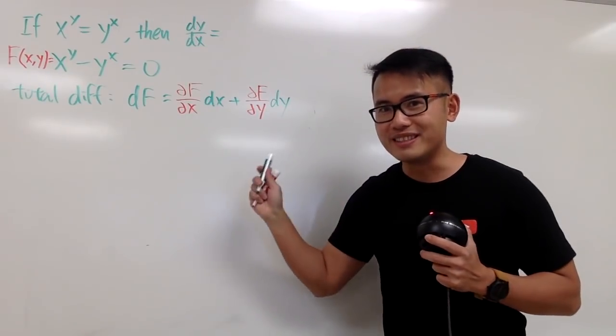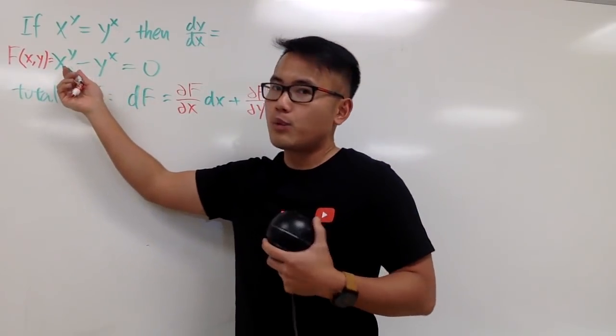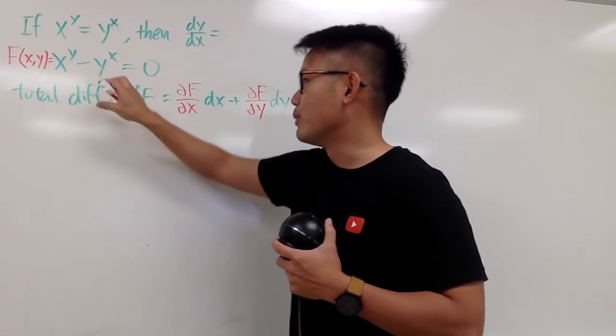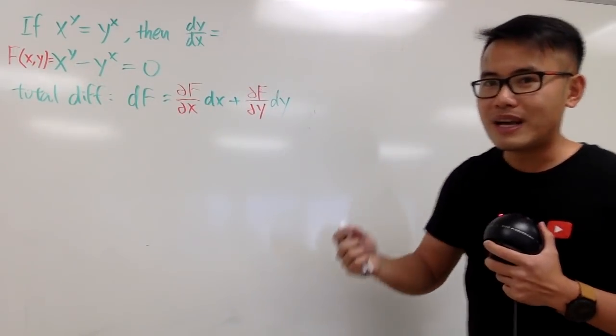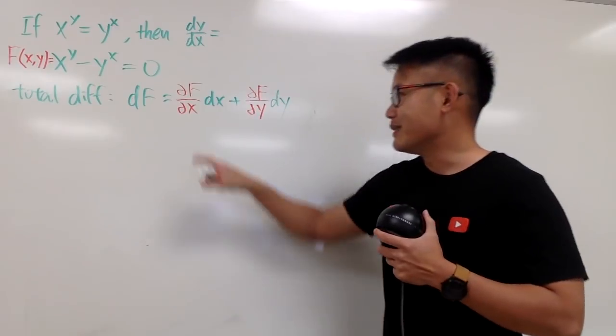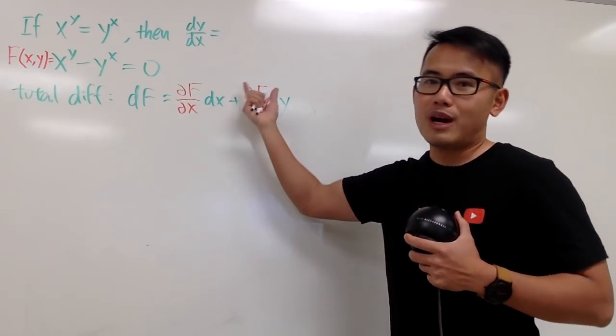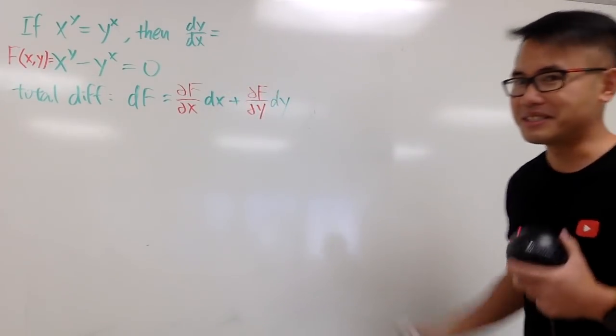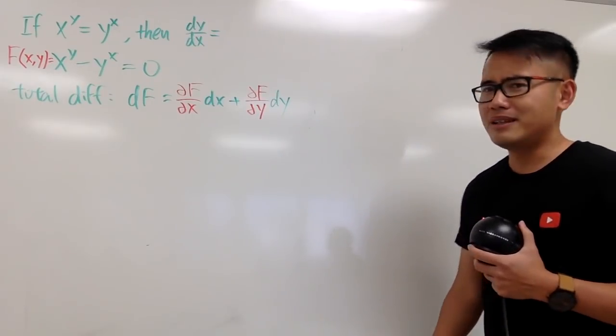And the cool part of doing this is that you may have like 100 variables right here, and you pretty much just continue with the same fashion, partial of F with respect to the first whatever variable, and then you put d whatever that variable, and then do that 100 times. That's the idea, but hopefully nobody ever does that.